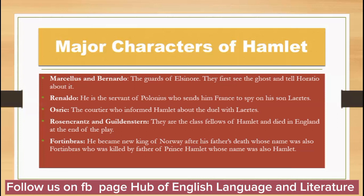Polonius also sends Reynaldo with money to France to befriend Laertes and keep an eye on him to ensure he is not involved in any wrongdoing. After this, Ophelia comes to her father Polonius and tells him that Prince Hamlet had come to her in a disheveled state — his clothes and shirt were undone, his hair was in disarray — and he grabbed her wrist tightly, stared at her face, and then left. She says she thinks Hamlet has gone mad. Polonius decides to inform the king and queen, and suggests a plan: arrange a meeting between Ophelia and Hamlet and eavesdrop on their conversation to discover what is really the matter.